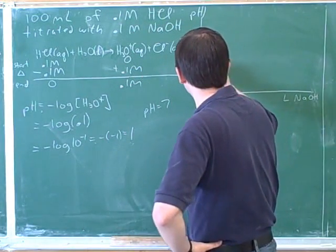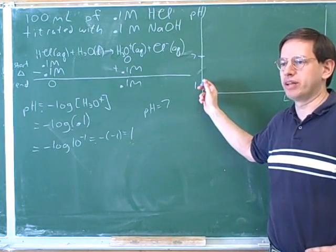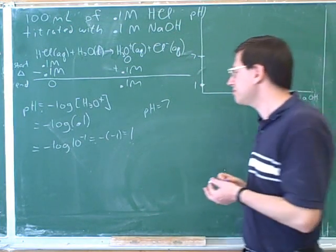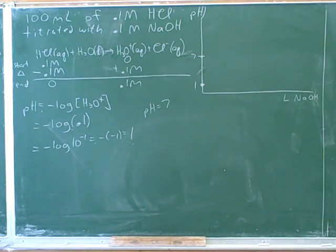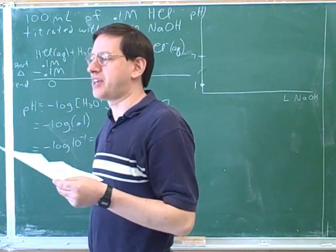So that was the answer to my question. This y-intercept should be at a pH of 1. OK, so let's take a look at the handout. Which of the cases in the handout did we just learn how to do? Strong acid? Yeah, the second row.